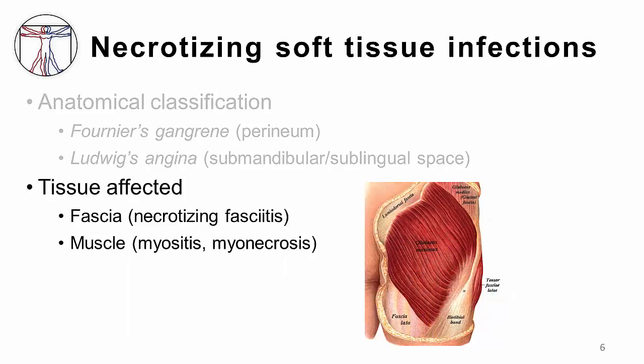Alternatively, terms like necrotizing fasciitis or myonecrosis refer to classification by depth of infection and types of tissue involved.